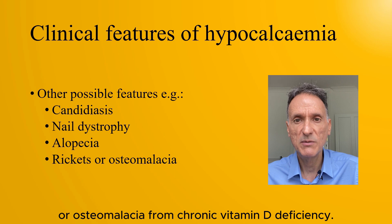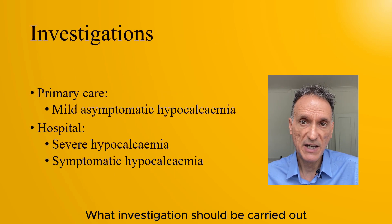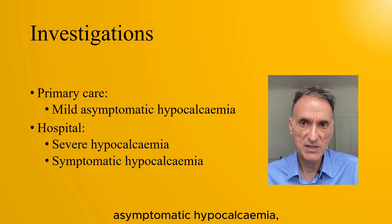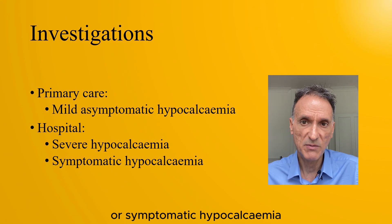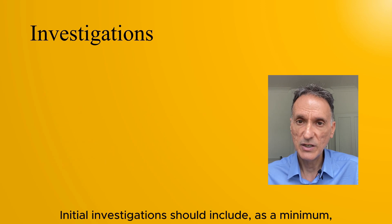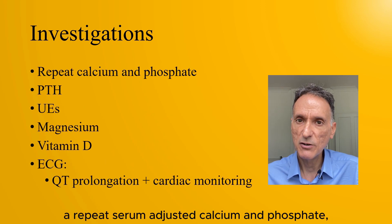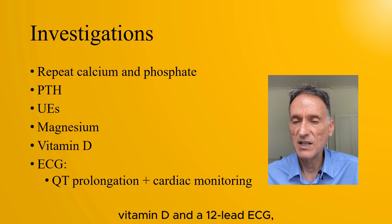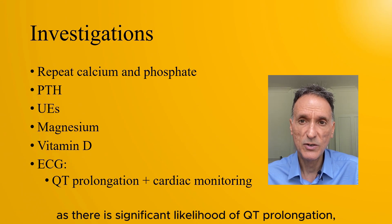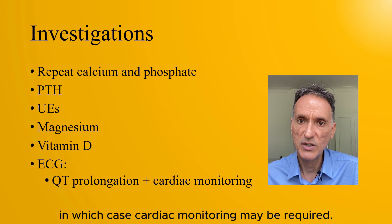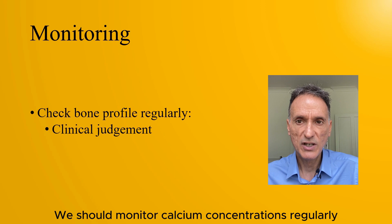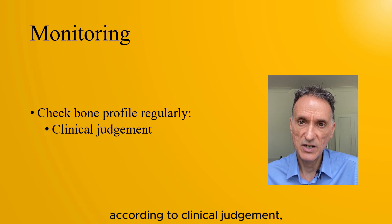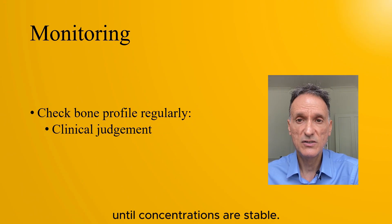What investigations should be carried out in primary care if we find hypocalcemia? We are obviously talking about mild asymptomatic hypocalcemia, because patients with severe or symptomatic hypocalcemia should be referred to hospital. Initial investigations should include, as a minimum, a repeat serum-adjusted calcium and phosphate, parathyroid hormone, urea and electrolytes, magnesium, vitamin D, and a 12-lead ECG, due to the significant likelihood of QT prolongation, in which case cardiac monitoring may be required. We should monitor calcium concentrations regularly, with serum bone profile checked perhaps weekly or fortnightly depending on the case, until concentrations are stable.